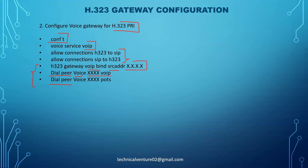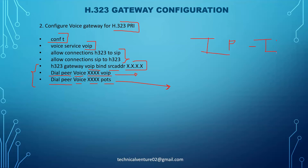To create dial peers, use the command 'dial-peer voice XXXX voip' or 'dial-peer voice XXXX pots'. A POTS dial peer is created between your gateway and the PSTN, while a VoIP dial peer is created between IP networks - for example between the gateway and CUCM, or between the gateway and a CUBE or IP service provider. VoIP dial peers handle IP-to-IP connectivity.